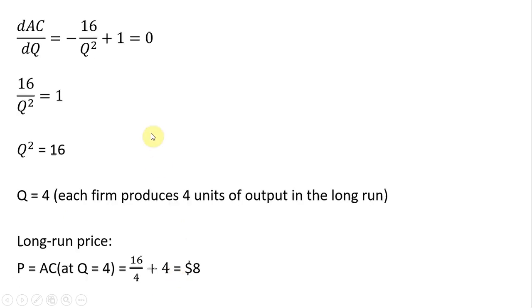So in the next slide here, I rewrite the derivative, and now I'm going to just solve for Q. Just moving one thing over to the other side, getting rid of the minus signs, multiplying through by Q squared, taking the square root of both sides, each firm will produce four units of output.